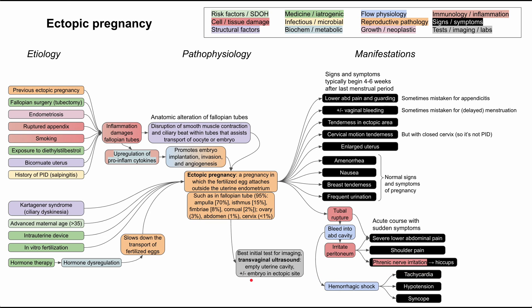One last note on imaging: the best initial imaging test for ectopic pregnancy is the transvaginal ultrasound. The key defining characteristic is that despite all these symptoms and a high beta-HCG on urine or serum test, the patient has an empty uterine cavity. Depending on where the ectopic pregnancy is, you might be able to see the embryo at an ectopic site, such as in the fallopian tubes. This has been a short flowchart of ectopic pregnancy — I hope it was helpful, and thank you for listening.